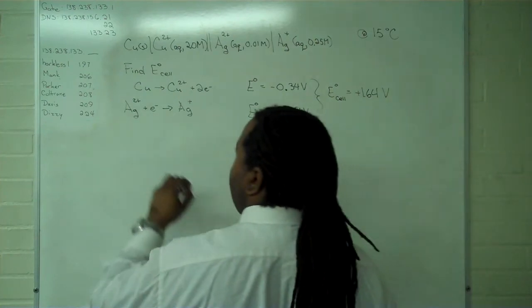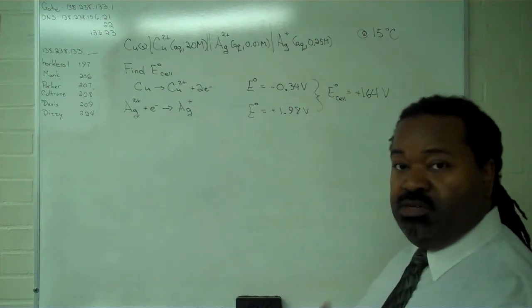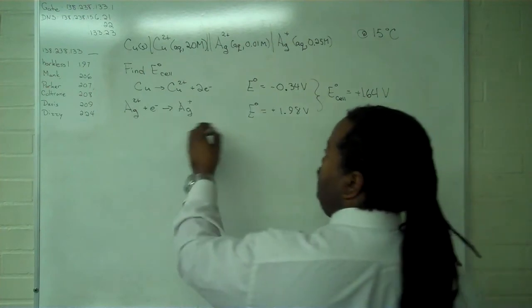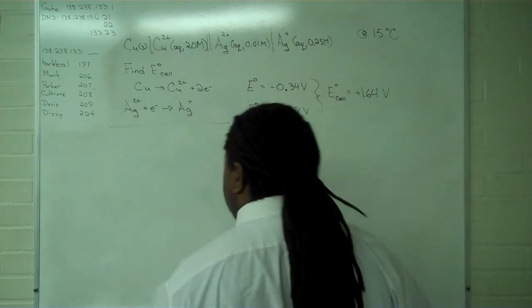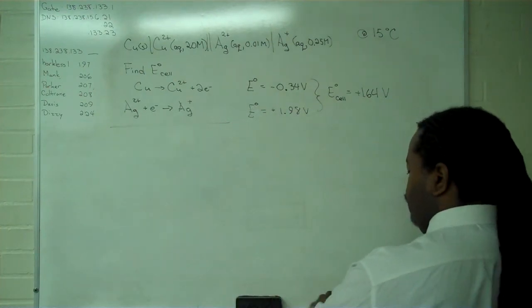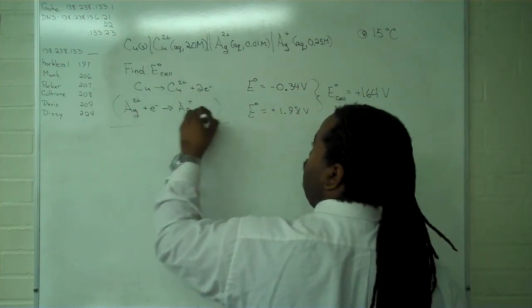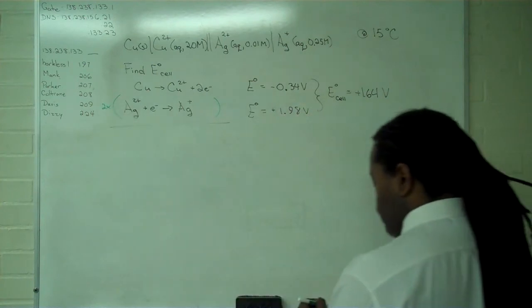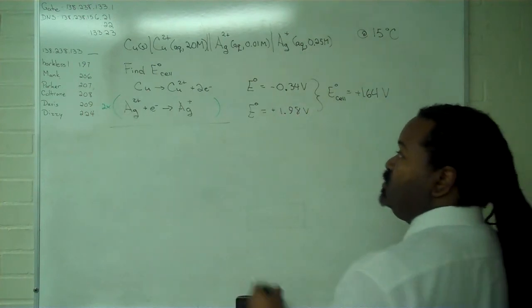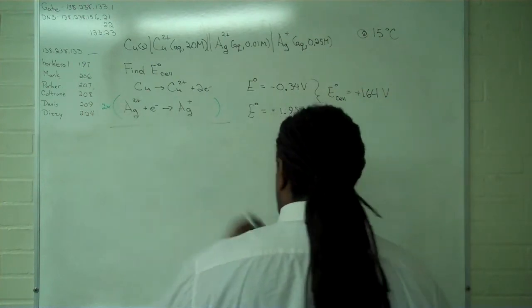Step two is to find the form of Q, the reaction quotient. And for that, we're going to need to combine our half-cells to get one overall redox reaction. And in order to do that, we need to multiply here by two so that our electrons will cancel.